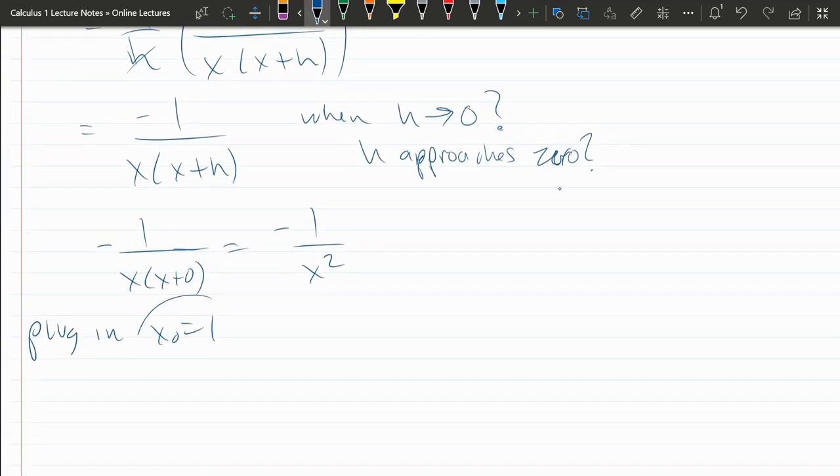So we're plugging in x naught equals one here as our x value. So our slope is negative one over one squared. And that reduces to negative one over one, or just negative one.